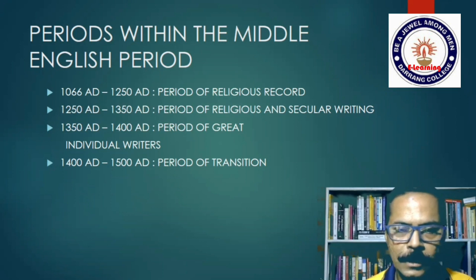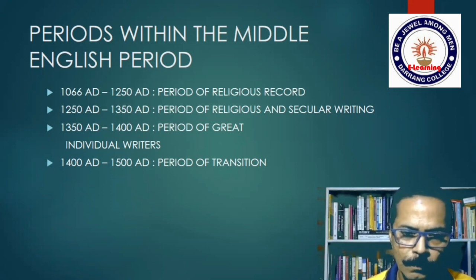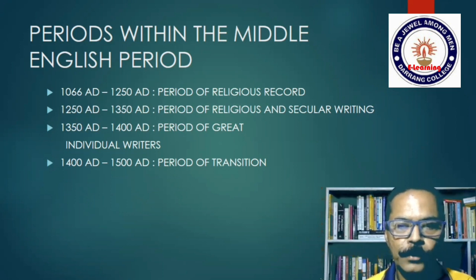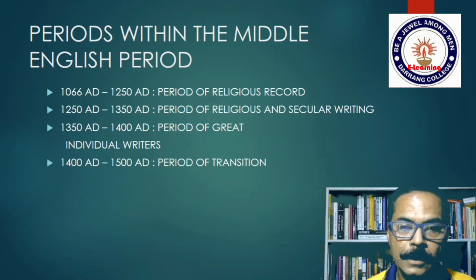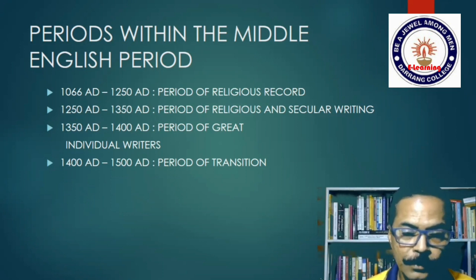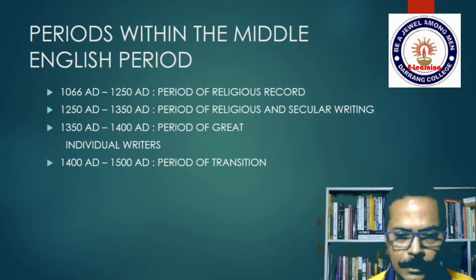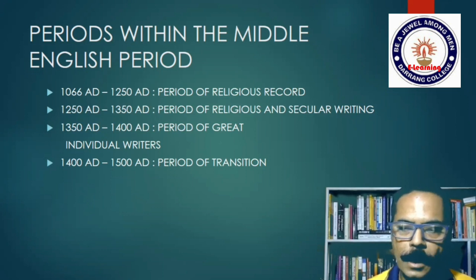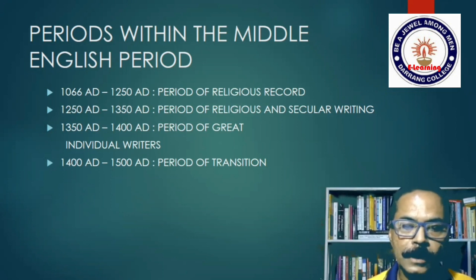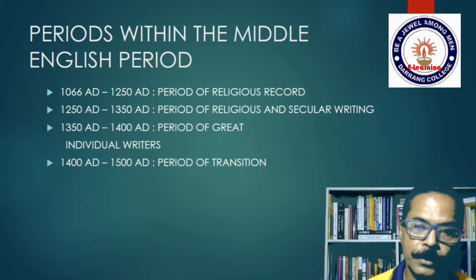The Old English language was now under heavy influence of Norman French, and that is what Middle English is. In this period — 1350 to 1400 — we see the rise of great individual writers like Chaucer, Langland, and others, whereas before most writers were anonymous. After 1400 comes a slump, which is natural after a high point; but there is also preparation for the next great age, the Renaissance. Hence this period is called a period of transition.